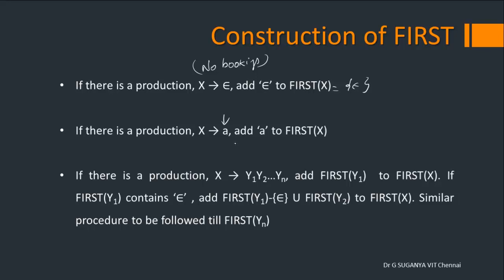X is a non-terminal — it is a family — and 'a' is a terminal, an individual who has booked to visit the doctor. In which case you have to add that terminal to FIRST of X; that is, he is the one who is going to get treated by the doctor first. If there is a production X gives a number of symbols, that is a family.